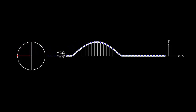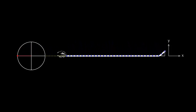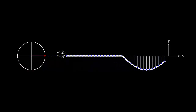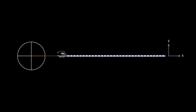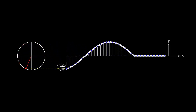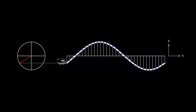Half an oscillation in the positive Y direction causes a crest to travel along the rope. Half an oscillation in the negative Y direction causes a trough to travel along the rope. If the end of the rope is vibrated continuously, wave after wave travels along the rope.